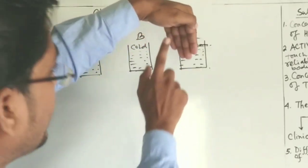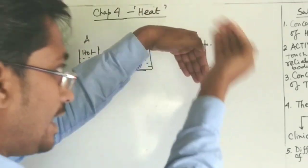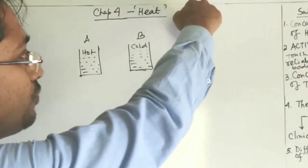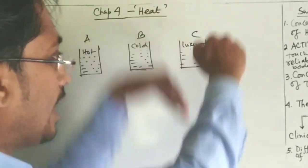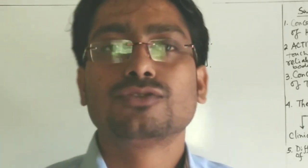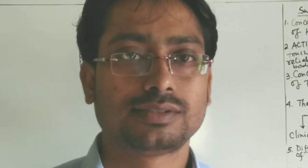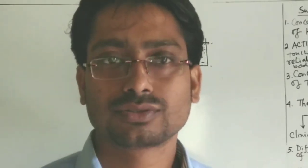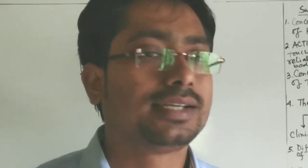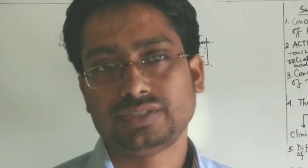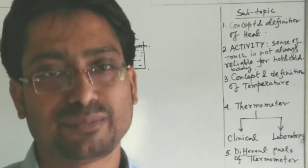After placing both hands into container C, the left hand — which was previously in the hot water — now feels container C is cold. The right hand — which was in the cold water — now feels container C is hot. Both hands give two different sensations about the same container. Your left hand says it is cold, your right hand says it is hot. That is why sense of touch is not reliable for determining if a body is hot or cold.